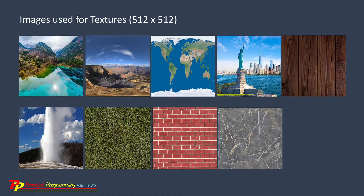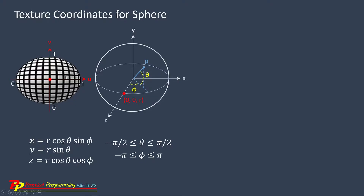Now let's consider the texture coordinates for our sphere. We start at a center point of the image that corresponds to a red dot, and then spread to both sides of U and V direction, which will cover the sphere surface. The texture coordinate at this point is U equal to 0, and this point U equal to 1.